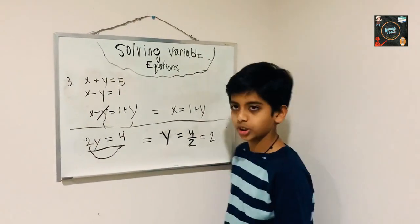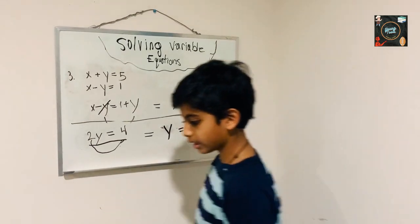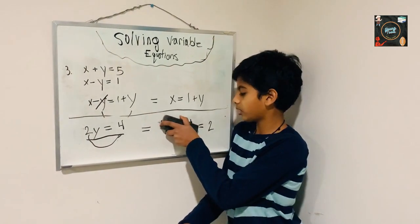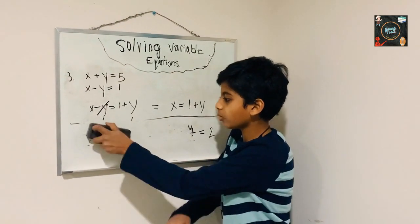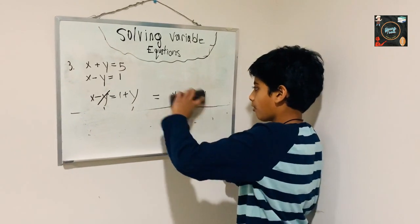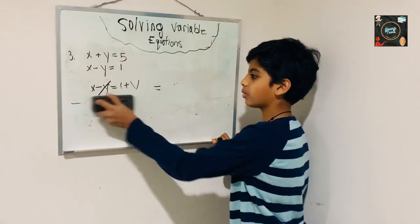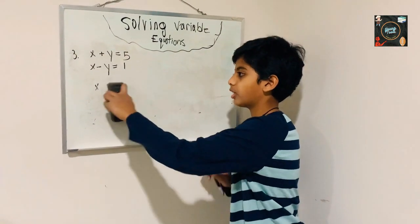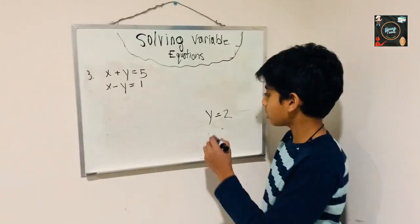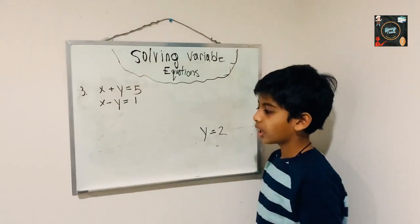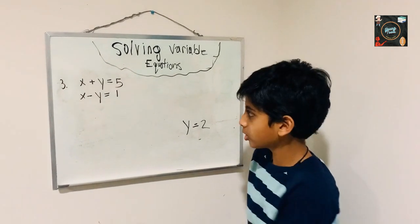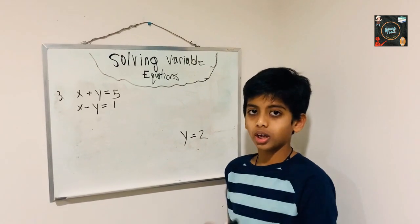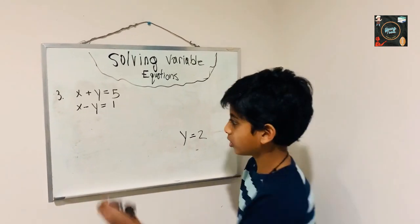So now we found the value of y. By this we found y's value, and we also found the value of x. In this equation we used two equations and solved both separately. We got y equals 2, and when we were solving we found x is equal to 1 plus y, so let's write that down.